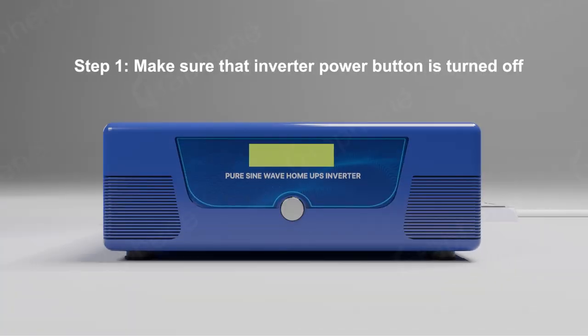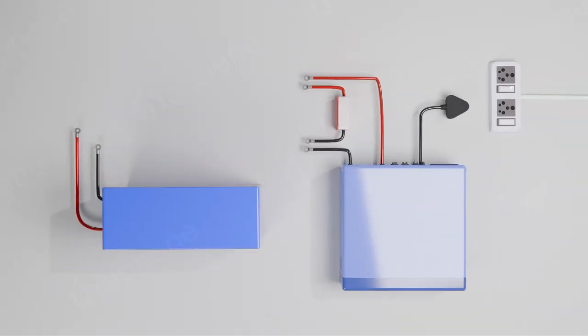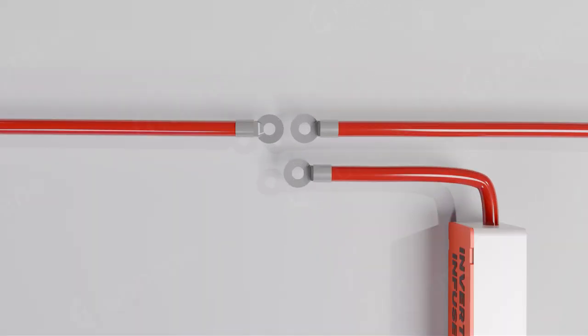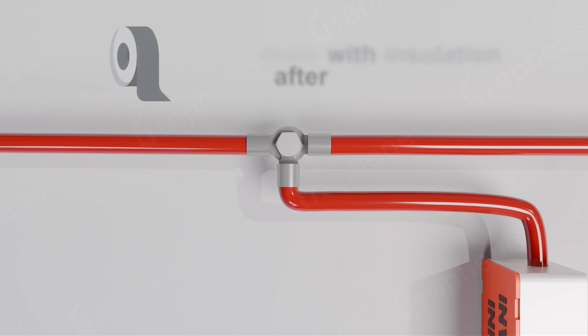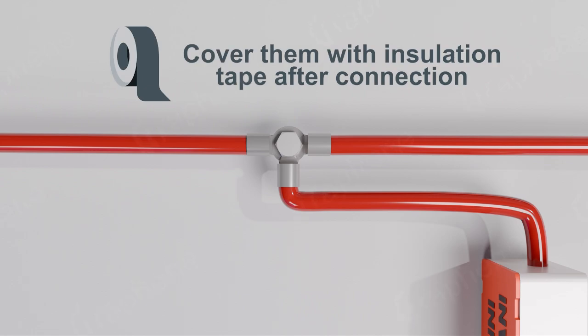Step 1: Make sure that inverter power button is turned off. Step 2: Connect these three red wires firmly. Cover them with insulation tape after connection.